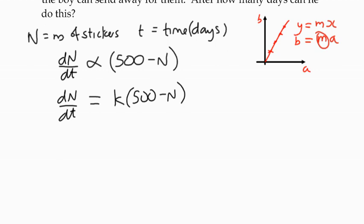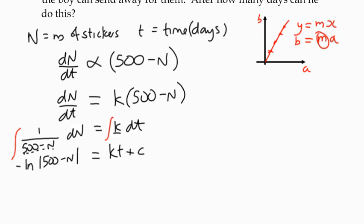What we want to do is, as we have done before, function in n dn equals a function of t dt. So we can write down 1 over 500 minus n dn equals k dt. If we integrate both sides, then we end up with the natural log of 500 minus n divided by the derivative of 500 minus n, which is negative 1. So that means it's going to be negative, is equal to kt plus c.